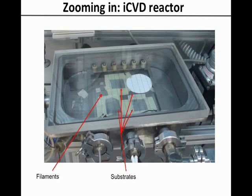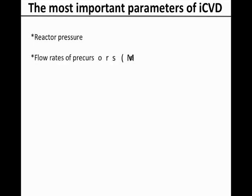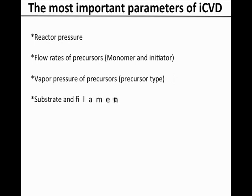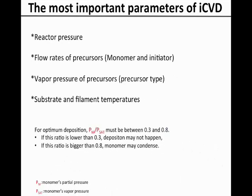The most important parameters of the iCVD process are the reactor pressure, the flow rates of the precursors (both the monomer and the initiator), the vapour pressure of these precursors, and the temperatures of the substrate and the filaments. Knowledge of PM over PSAT is extremely powerful for rapidly determining the window of processing parameters capable for iCVD film growth for a new monomer.